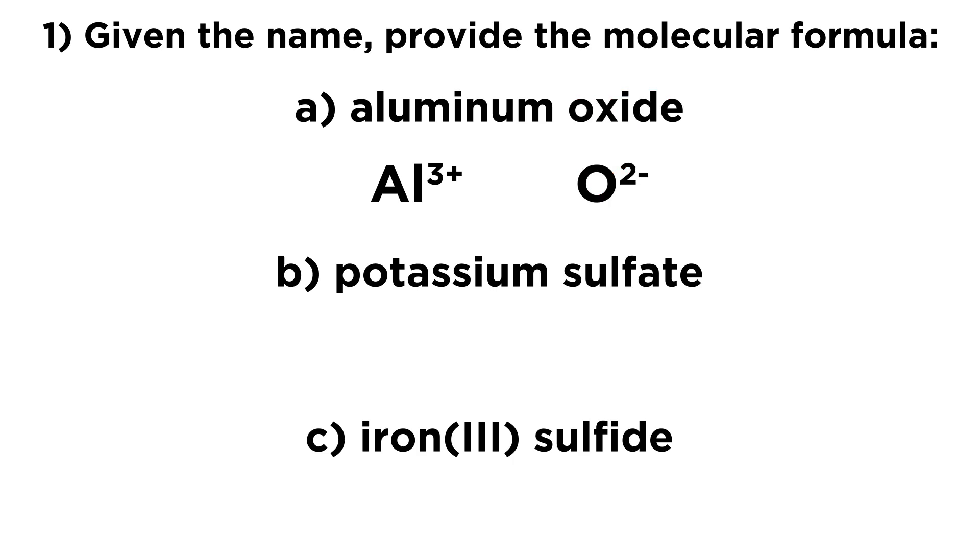So we have Al3+ and O2-, and if these are going to come together to form aluminum oxide, which is a neutral compound, what ratio must these come together in, in order to form a neutral compound? Well, we know we're going to need two aluminum ions for every three oxide ions, because that is going to add up to six positive charges and six negative charges.